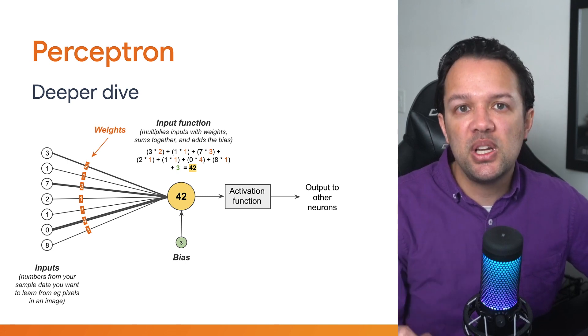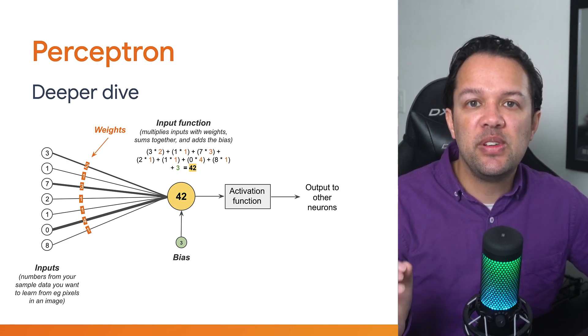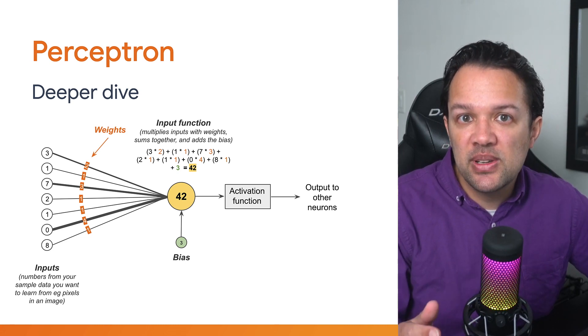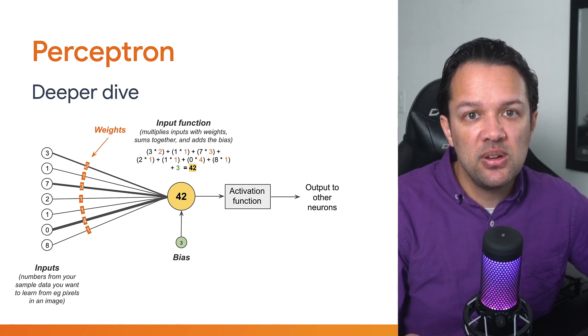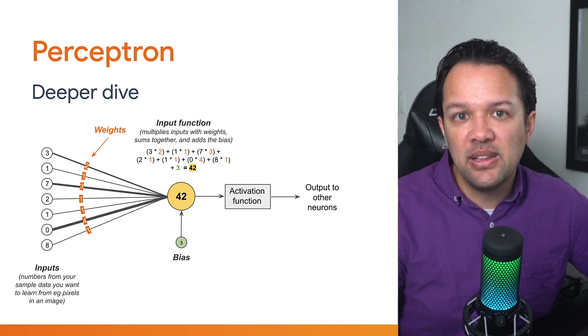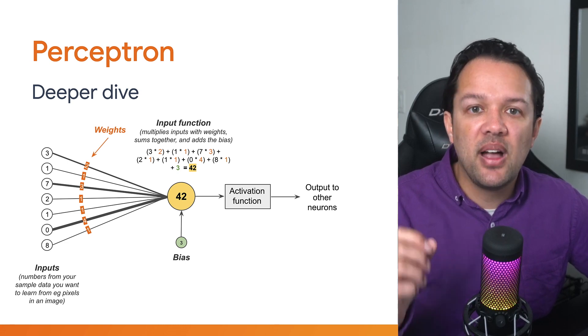Well, the last part of an artificial neuron is something called the activation function. All this means is that if the grand total calculated is greater than some threshold, then the neuron activates, providing some transformed output value. Let's take a look at the activation functions in a little more detail to understand this further.